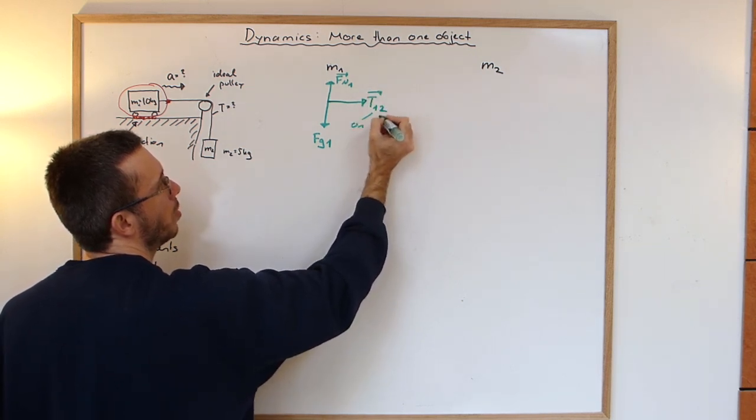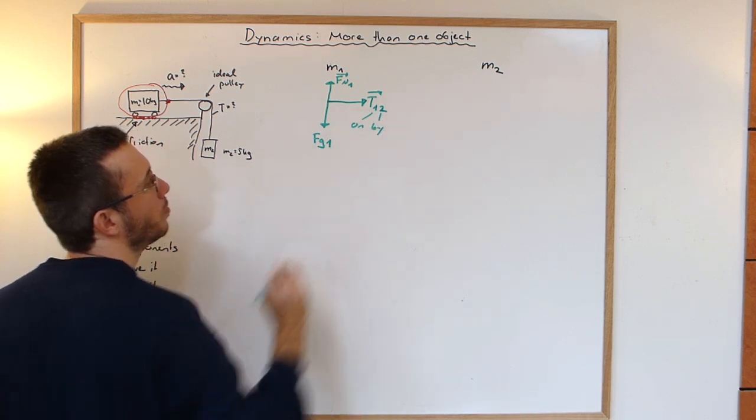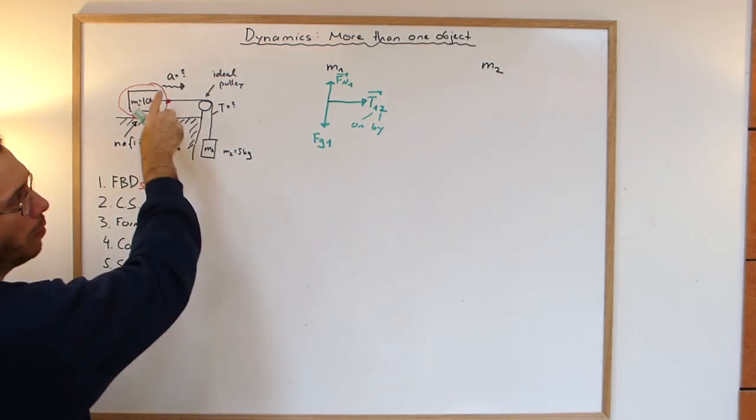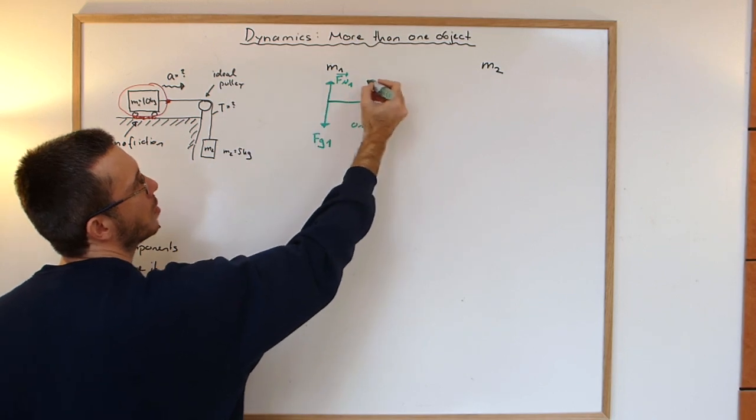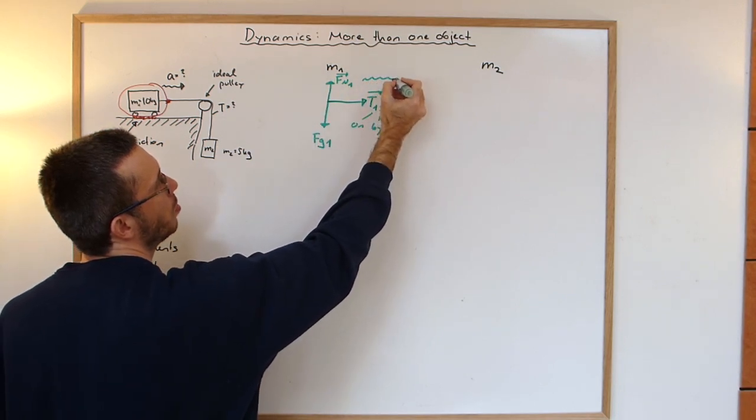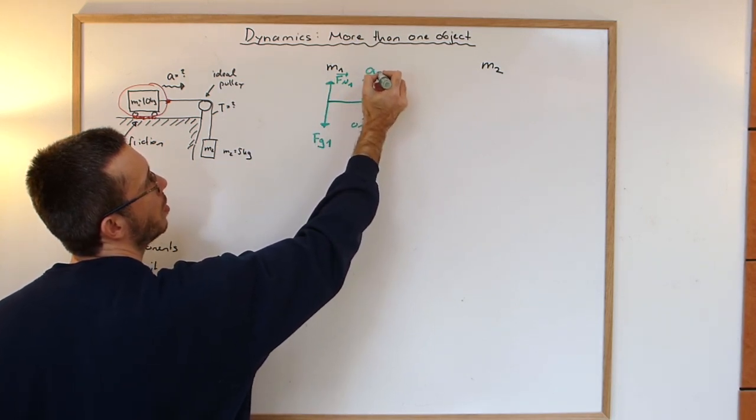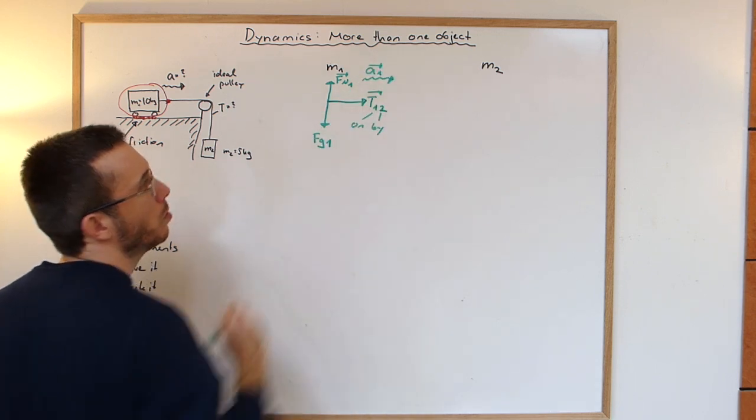So tension on 1 by 2. And then I will have an acceleration to the right. So I'm assuming the thing has an acceleration A1 to the right.